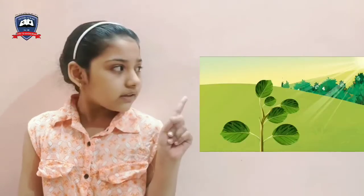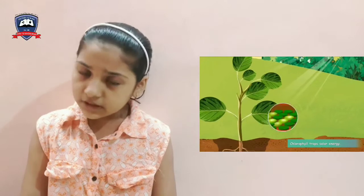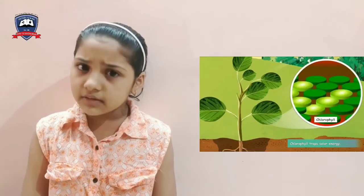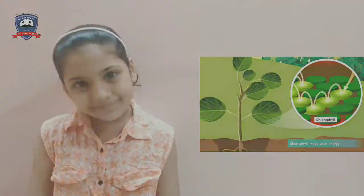Most plants we see are green in color. They are green because leaves are green. Leaves have a green substance called chlorophyll. Chlorophyll is necessary for plants to make food. Let us see how plants make food.